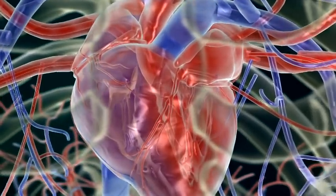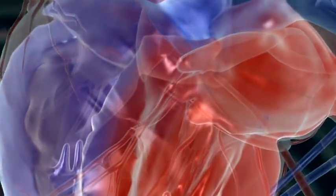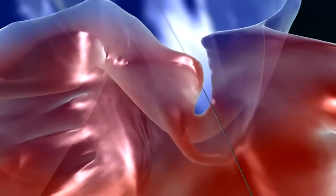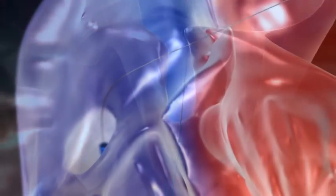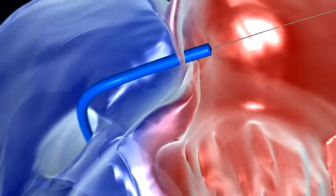The NHS is currently in development of a significant new PFO closure device. This delivery system, after catheterisation in the femoral vein of the leg, is threaded along a guide wire to the right atrium of the heart and through the PFO into the left atrium.